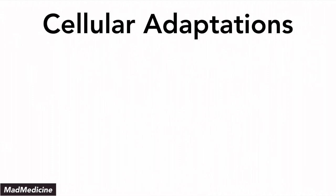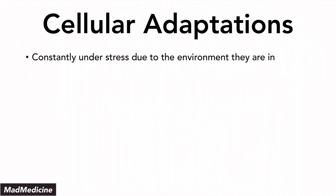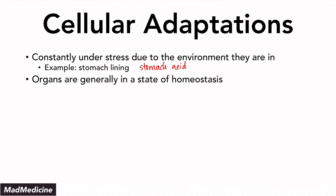Our cells are constantly under a lot of stress because of the environment they're in. One example is the stomach lining — the cells that make up the stomach lining are constantly being exposed to stomach acids, which are very erosive and dangerous. Our cells have adapted a way to interact with that environment and function properly. When it comes to our organs, generally in a normal person, our organs are in a state of homeostasis. That's very important because it will come back later.